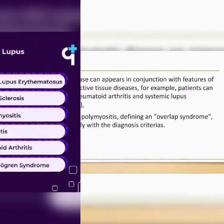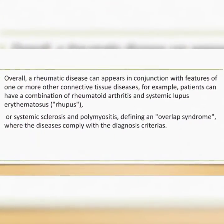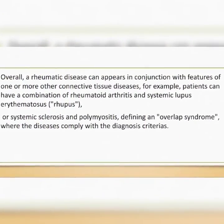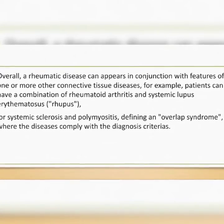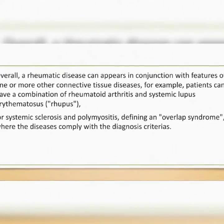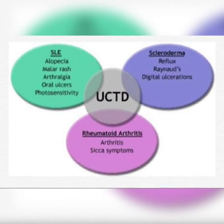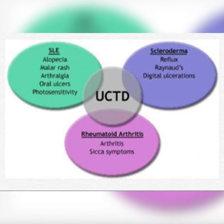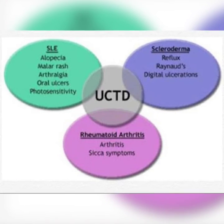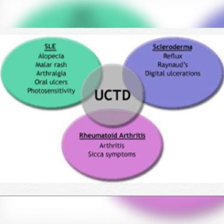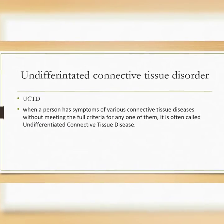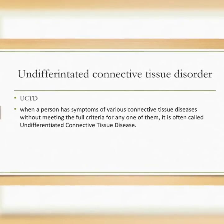Overall, a rheumatic disease can appear in conjunction with features of one or more other connective tissue diseases. For example, patients can have a combination of rheumatoid arthritis and systemic lupus erythematosus, known as Rupus, or systemic sclerosis and polymyositis, defining an Overlap Syndrome where the diseases comply with the diagnostic criteria. Sjogren's syndrome is most commonly associated with overlap syndrome. In overlap syndrome, diseases meet diagnostic criteria.